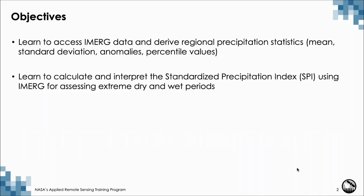Overall objectives of this advanced webinar are to learn to access iMerge data and derive regional precipitation statistics — that is means, standard deviation, anomalies which is departure from mean, and percentile values of precipitation. All these are useful for deciding dry and wet episodes regionally as well as locally. A further objective is to learn to calculate and interpret the Standardized Precipitation Index, or SPI, using iMerge, which also helps in assessing extreme dry and wet periods.